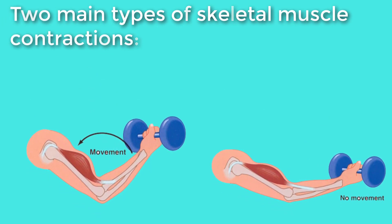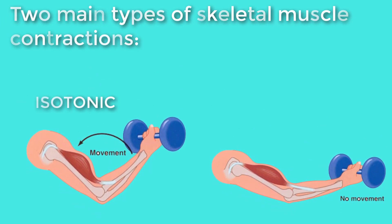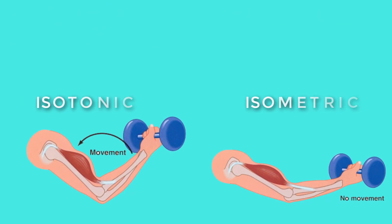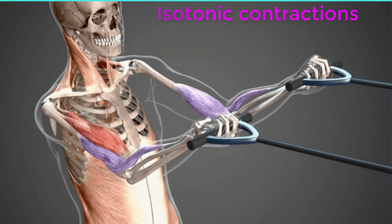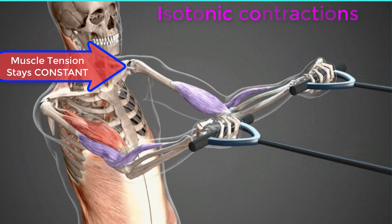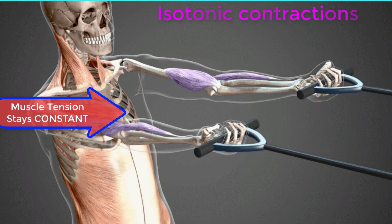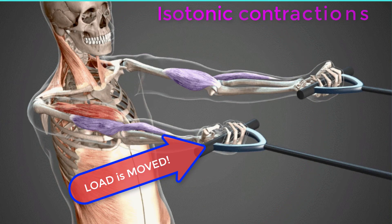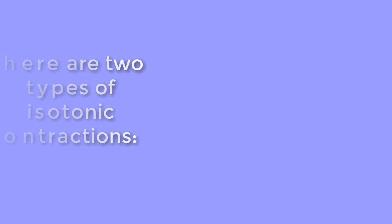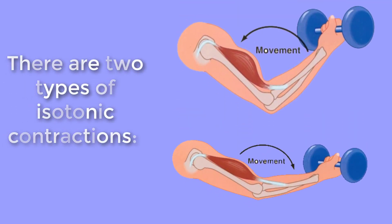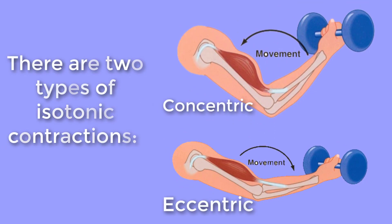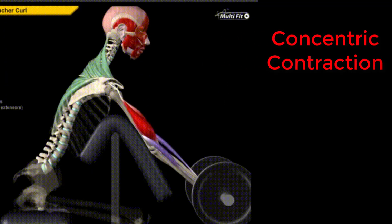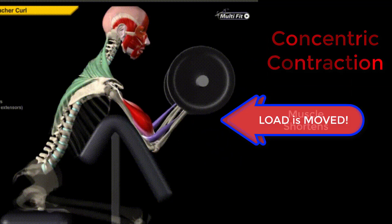This results in two main types of skeletal muscle contractions: isotonic contractions and isometric contractions. In isotonic contractions, where the tension in the muscle stays constant, a load is moved as the length of the muscle changes. There are two types of isotonic contractions: concentric and eccentric.